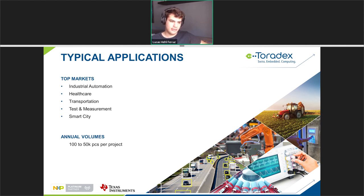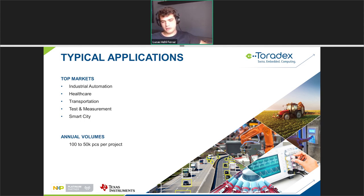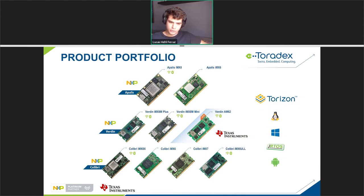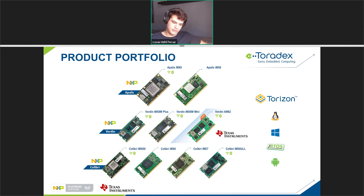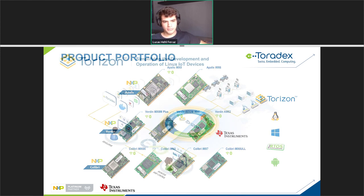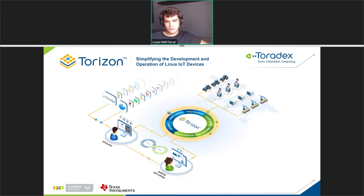Having a safety net behind your devices in the field that allows you to easily go there and troubleshoot fast really brings a lot of value, especially in these critical verticals. Our typical volumes per project on system on modules is about 100 to 50,000 pieces per year — this is where system on modules really shine. Going over our hardware portfolio very quickly, we have quite a few system on modules, most of them NXP-based. We are just launching our Verdin AM62 based on the TI AM62 SoC, which we are very excited about, but for this webinar we want to talk mostly about software.